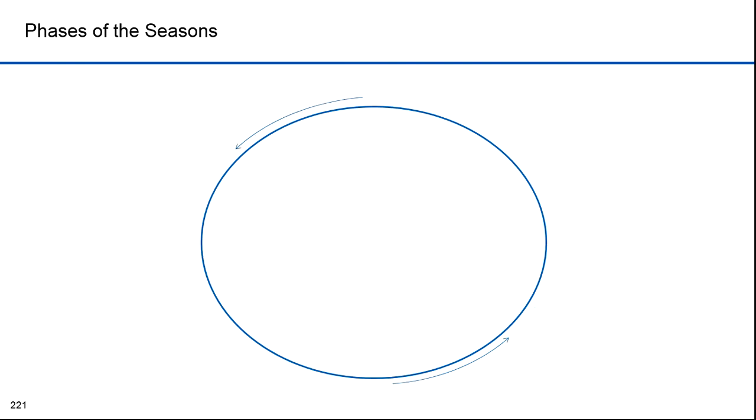We're going to exaggerate the eccentricity so this is clear. The sun appears at one focus. Here's the point of perihelion. In 2014, it occurred on 4 January. I include the year because the date changes year to year. Here's the distance. Here's the aphelion point. In 2014, it occurred on 4 July. Here's the distance.